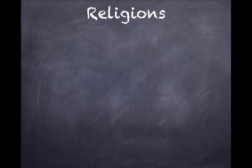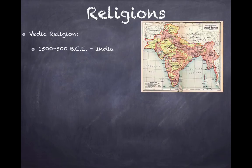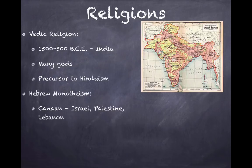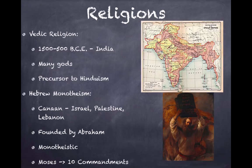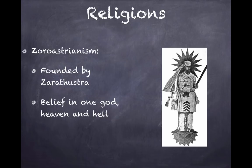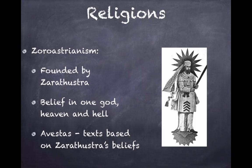The Vedic religions from 1500 to 500 BCE in India involved belief in many gods and were a precursor to Hinduism. Hebrew monotheism started in Canaan — present-day Israel, Palestine, and Lebanon — founded by Abraham. It is monotheistic, believing in one god, and Moses introduced the Ten Commandments. Zoroastrianism was founded by Zarathustra and involved belief in one god and in heaven and hell. It was very popular in the Persian Empire, and the Avesta contained texts based on Zarathustra's beliefs.